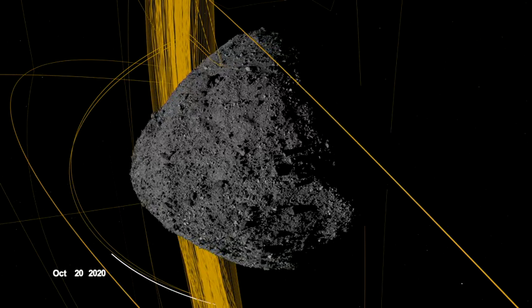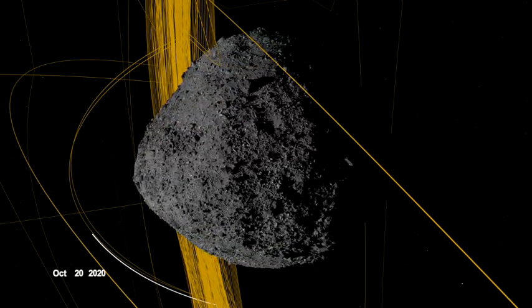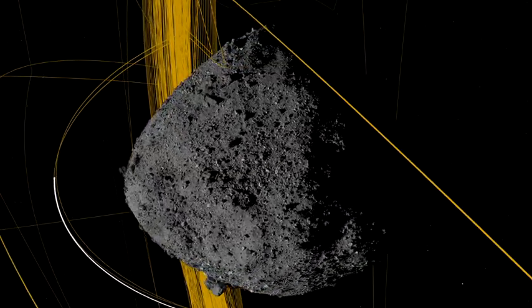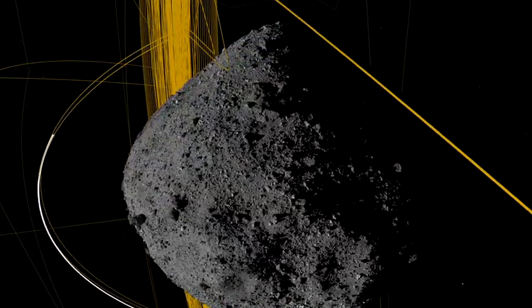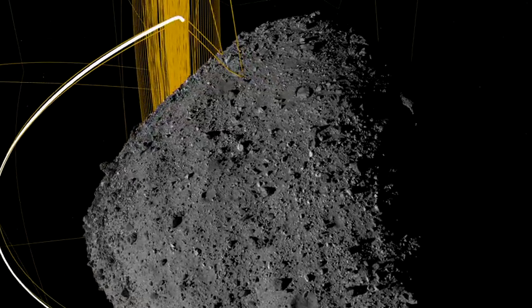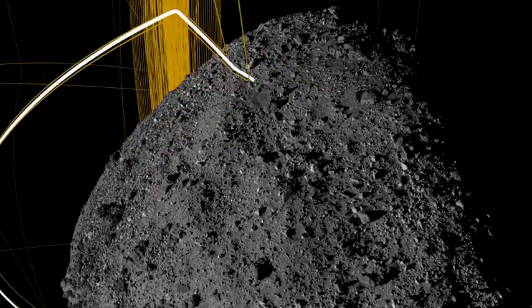A few hours before, mission controllers on Earth had sent the commands for the Touch and Go Sample Collection Maneuver, or TAG. As they watched with anticipation, OSIRIS-REx steered itself to sample site Nightingale, maneuvering toward the small crater at the walking pace of a spider.